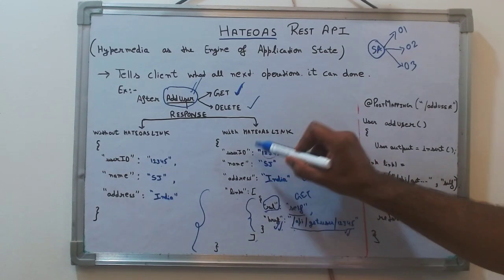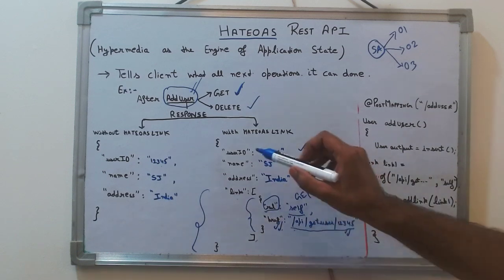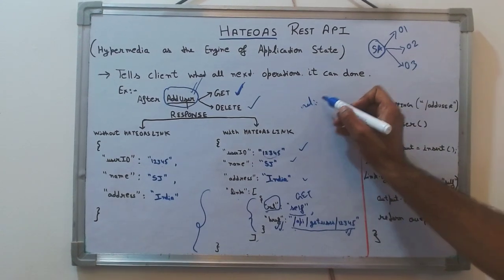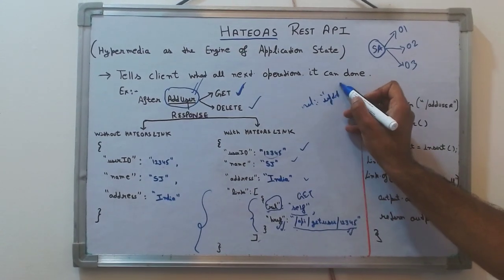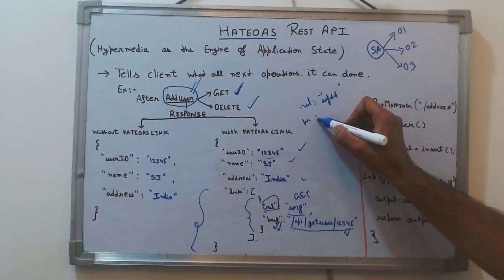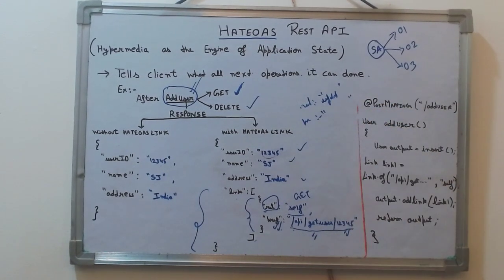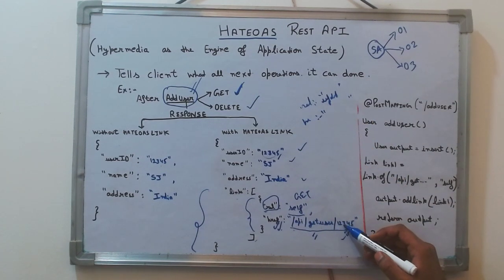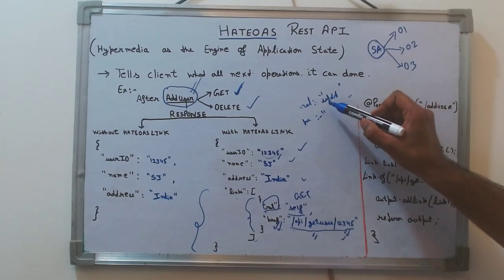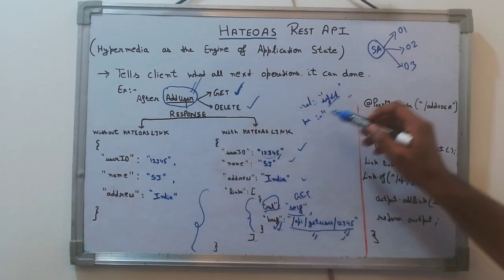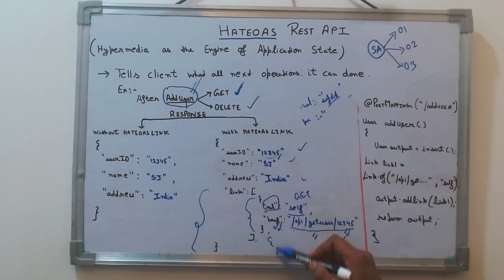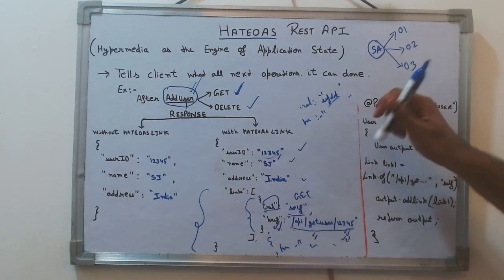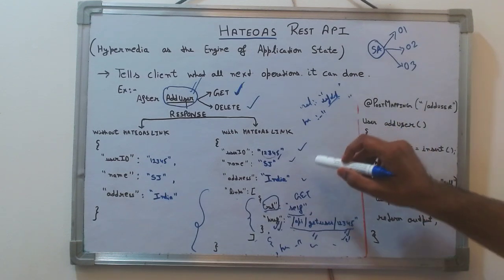The relation tells what is the relation of this URI with this particular user. For example, if you want to do an update, you can set the relation to 'update' and the href to the dynamic update link. These links are dynamic — not static. For this user one link is created; for another user, a different ID will be in the link, generated dynamically depending on the state.